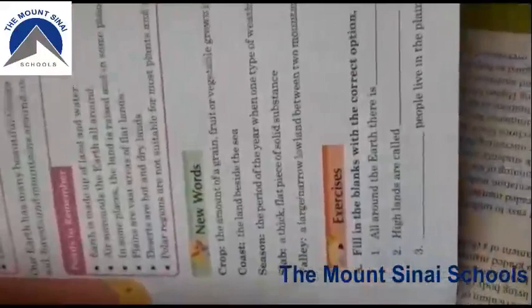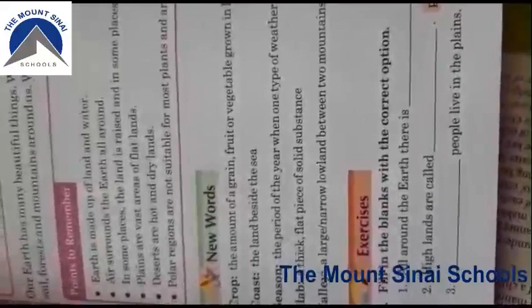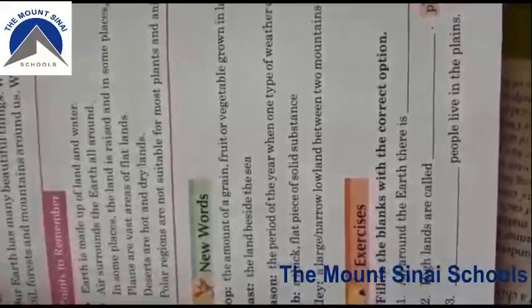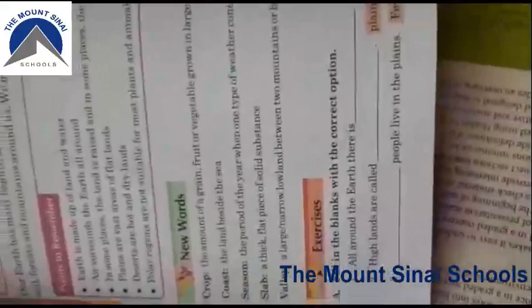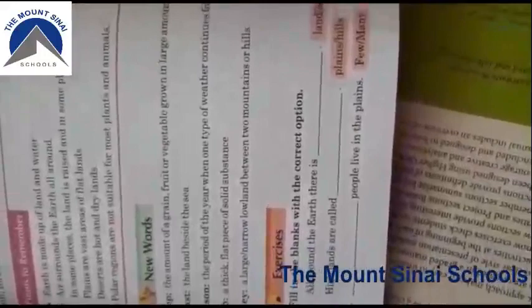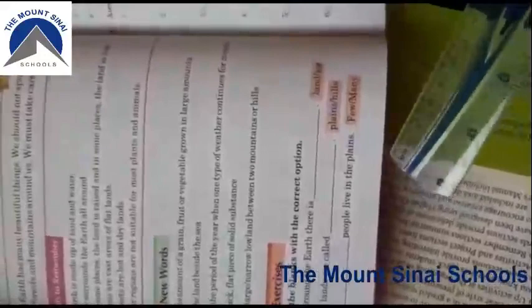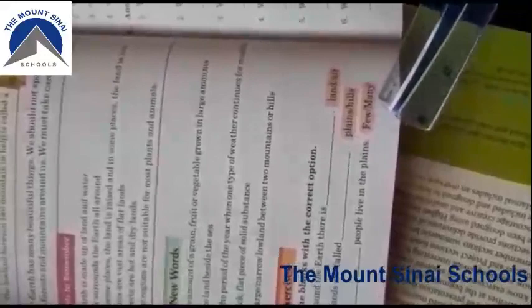Next are the points to remember — these are very important points from your lesson. If you learn them, you can easily understand the concept and know how many types of land there are and what the specialties of each land type are. On the same page, exercises start — fill in the blanks with options. The answers are: all around the earth there is air; highlands are called hills; many people live in the plains.